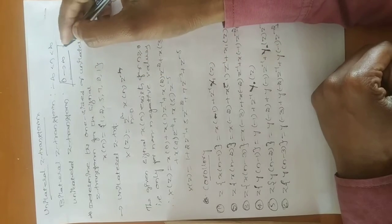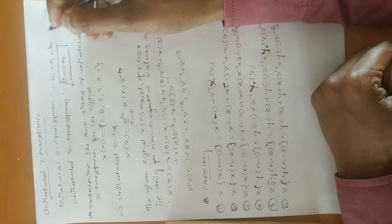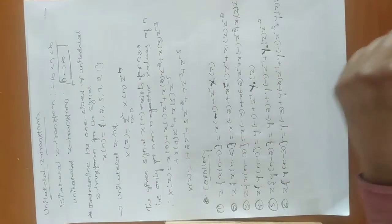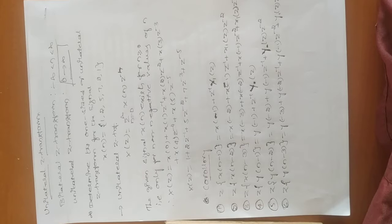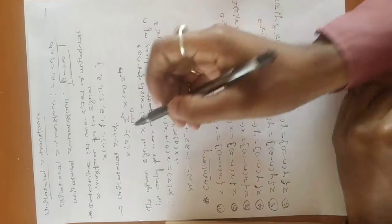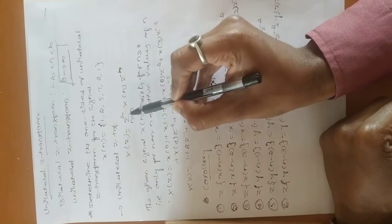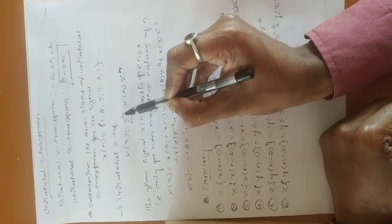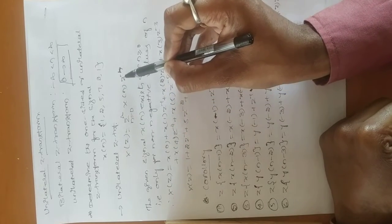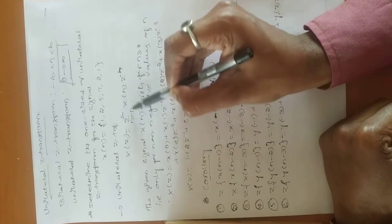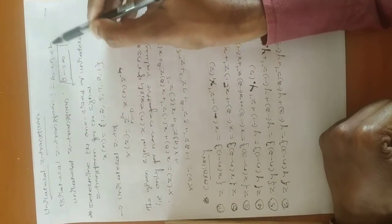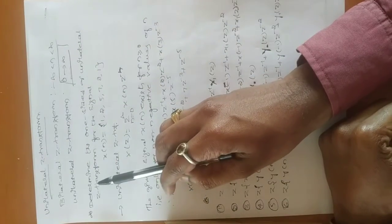The general equation of the Z-transform is X(z) = Σ from −∞ to ∞ of x(n)·z⁻ⁿ. For the unilateral Z-transform that equation is modified: X(z) = Σ from 0 to ∞ of x(n)·z⁻ⁿ. It is a one-sided sequence, whereas the bilateral is a two-sided sequence.